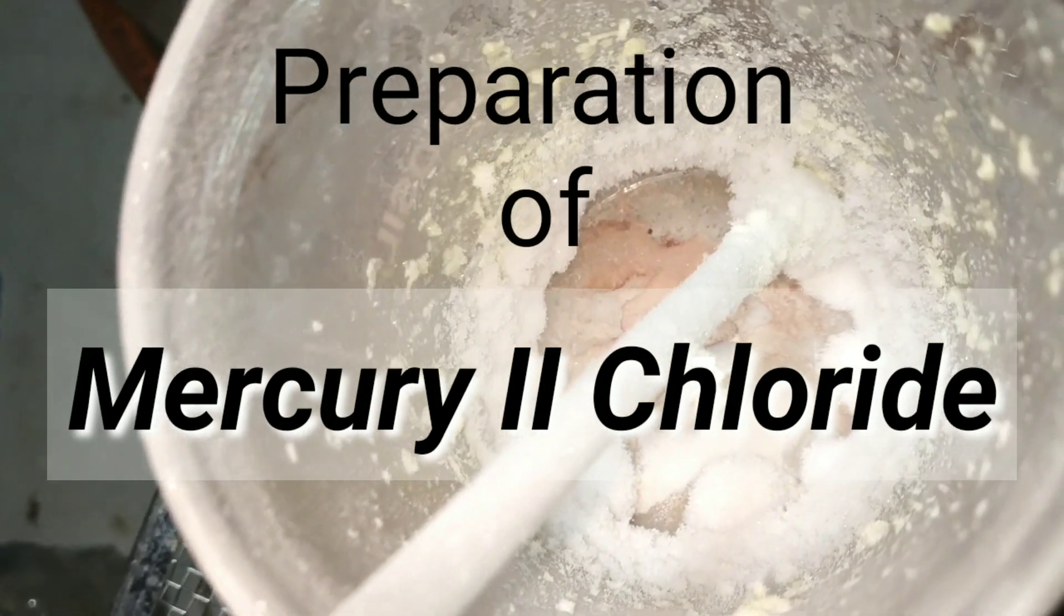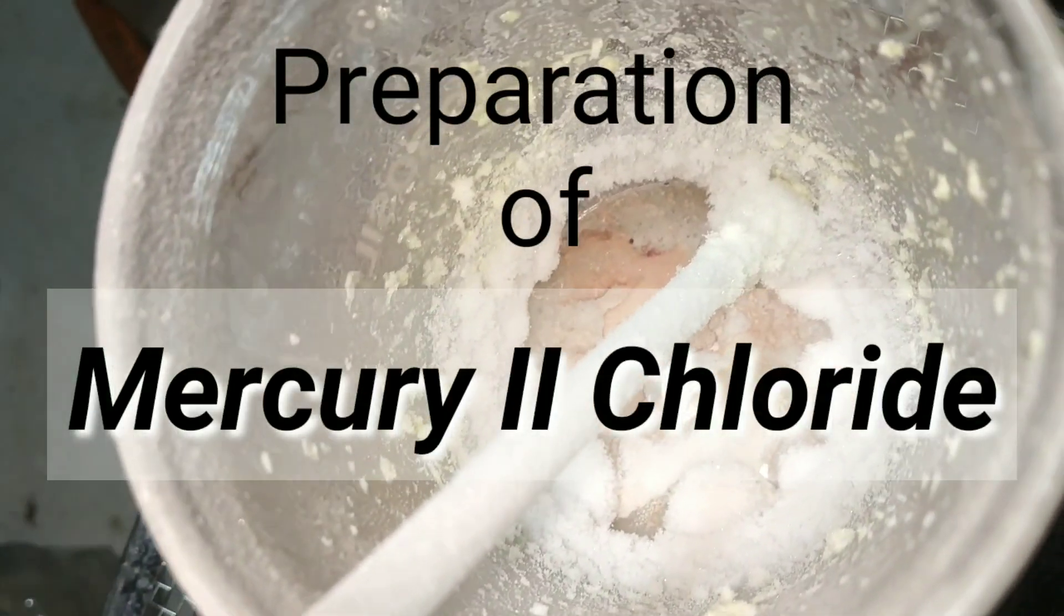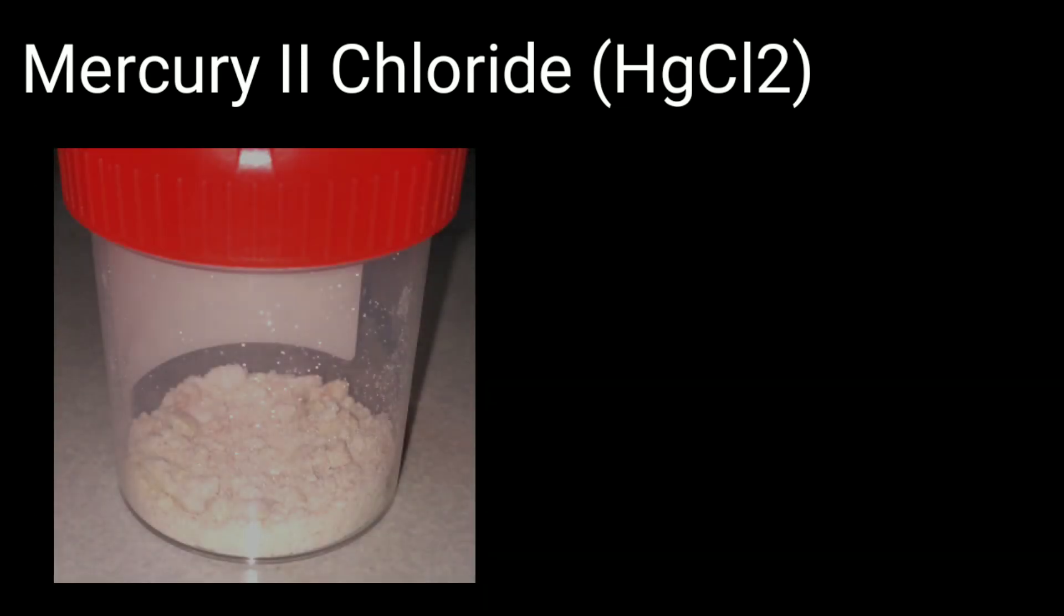Friends, today we will be making mercury chloride from mercury metal. Mercury chloride, also known as corrosive sublimate due to its tendency to sublime at higher temperatures, is an extremely toxic mercury compound which is also a very useful laboratory reagent and was earlier used in the treatment of syphilis.